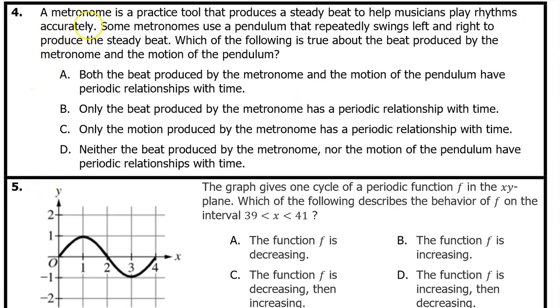Number 4. A metronome is a practice tool that produces a steady beat to help musicians play rhythms accurately. Some metronomes use a pendulum that repeatedly swings left and right to produce a steady beat. Which of the following is true about the beat produced by the metronome and the motion of the pendulum? Is it true that both the beat produced by the metronome and the motion of the pendulum have periodic relationships with time?